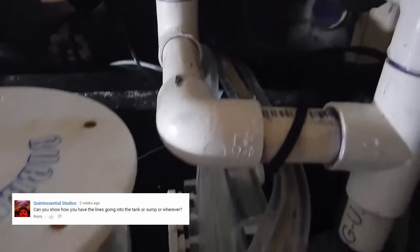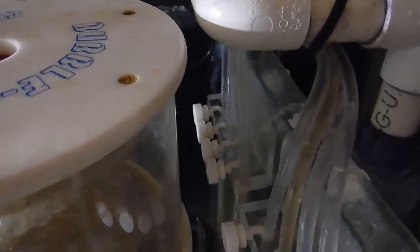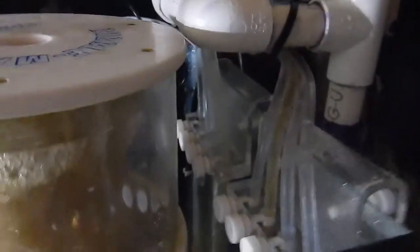Now I have everything dosed directly into the skimmer section, right before the return section. It's pretty much the bubble trap right there. I've been doing it this way for a while. There's a couple reasons why I actually don't like to dose anything before the probe.